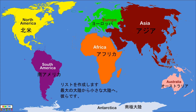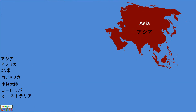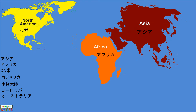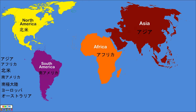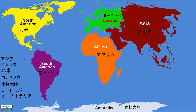We are going to make a list from largest in size to the smallest. They are Asia, Africa, North America, South America, Antarctica, Europe, and Australia.